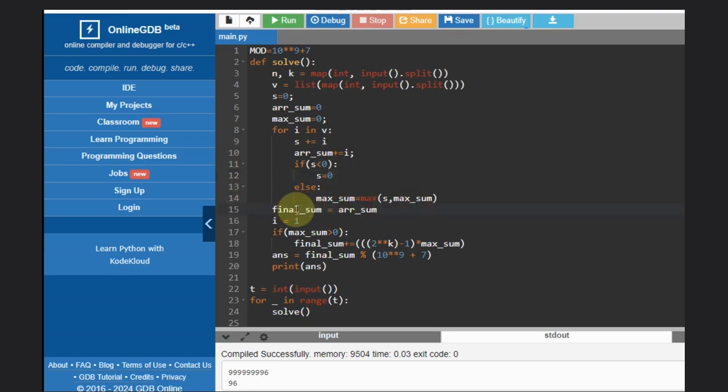The final array, initial final array will be the array sum, whatever is available, we need to take that, right? So we can ignore this.